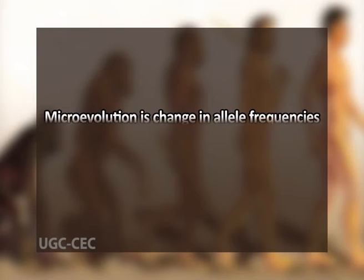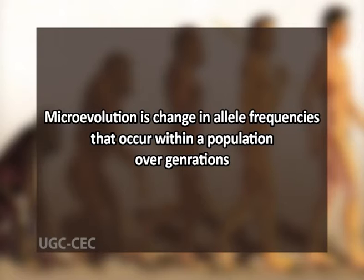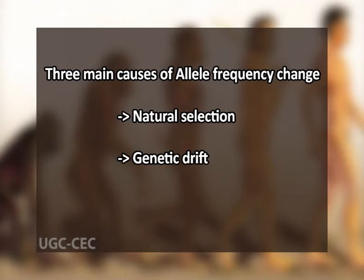Thus populations evolved, not individual members. Focusing on evolutionary change in populations, we can define evolution on its smallest scale — called microevolution — as a change in allele frequency in a population over generations. There are three main mechanisms that can cause allele frequency change: natural selection, genetic drift (chance events that alter allele frequencies), and gene flow (the transfer of alleles between populations). Each of these mechanisms has distinctive effects on the genetic composition of populations.